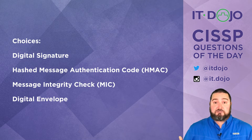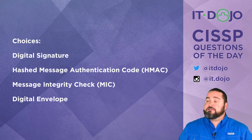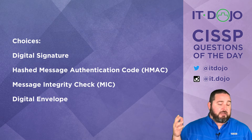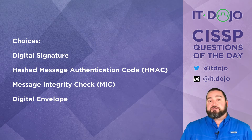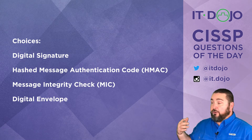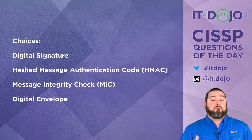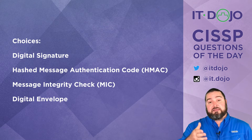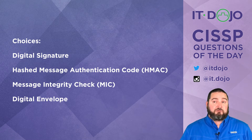The person on the other side, assuming they know the secret, can hash the plain text message along with the shared secret and validate they get the same hash — confirming the file hasn't been modified and that it's from you. Still awesome, but not the answer here. The next choice is message integrity check, which is specifically geared toward validating the integrity of a message in something like a wireless LAN security implementation — not the right answer either.